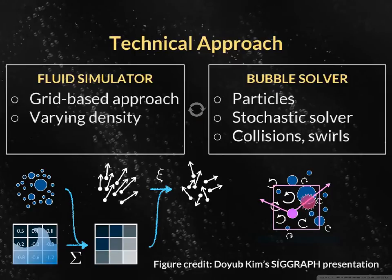The presence of bubbles decreases the effective fluid density of a grid cell. In this way, bubbles can accurately influence the flow of a fluid simulated with grid cells much larger than a single bubble. The flow of individual bubbles is modeled as a stochastic process. Non-deterministic effects are used to model collisions and swirls within the bubble flow.